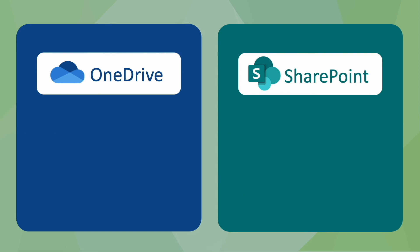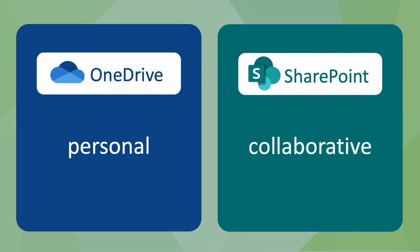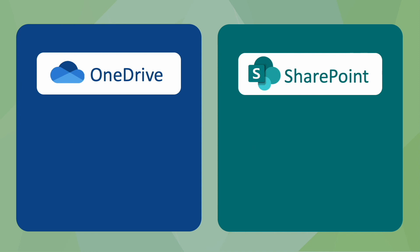So to recap: OneDrive is personal — your files. SharePoint is collaborative, for working with groups of people. Or another way to think about it: OneDrive is for one, and SharePoint is to share.